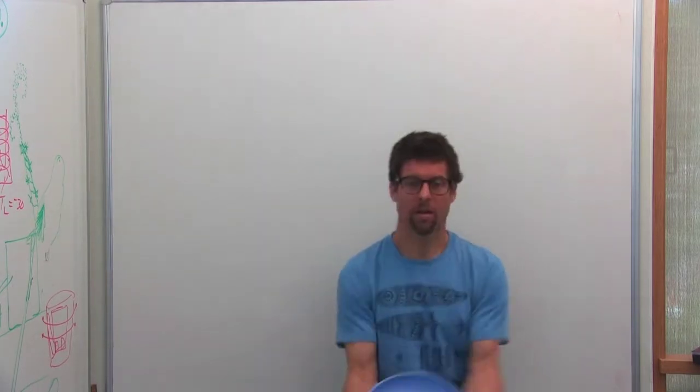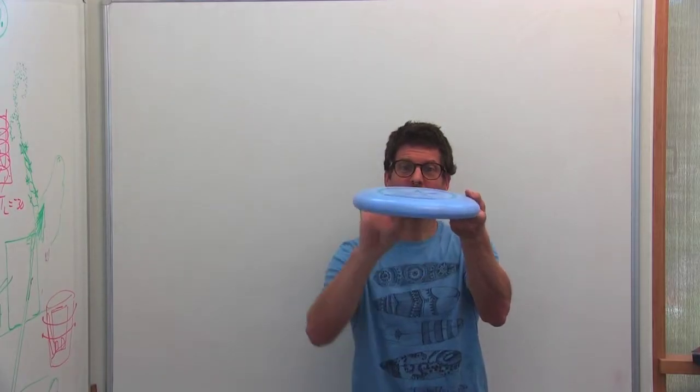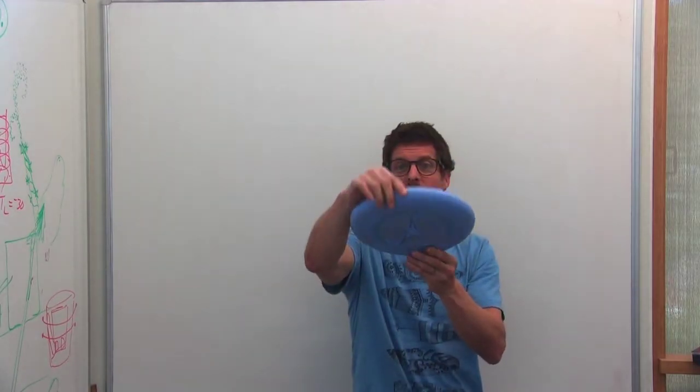If this frisbee is flying, when we touch it, it'll tumble. But because I push on it, that edge goes up.